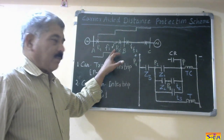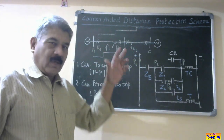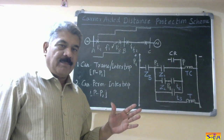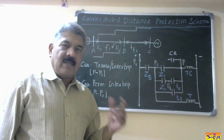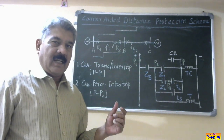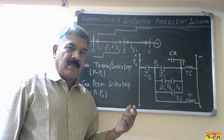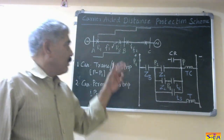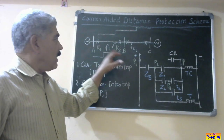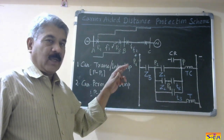For any fault, the relay which is near to the fault is called the local end relay, and the relay at the other end is called the remote end relay. So for fault F1, R2 will be the local end relay and R1 will be the remote end relay.